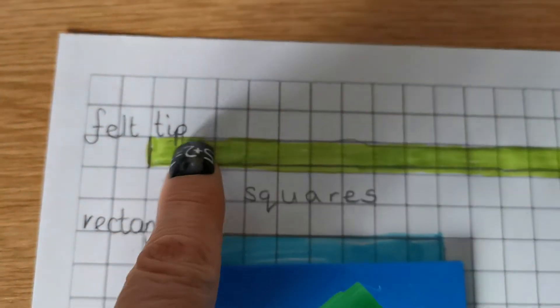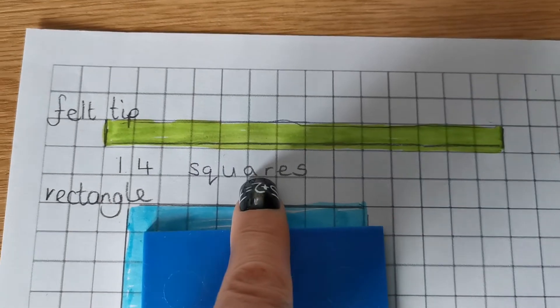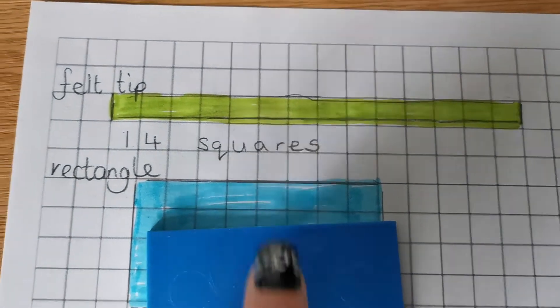So I wrote felt tip, drew round it, coloured it in, and measured it, counted the squares, and it was 14 squares.